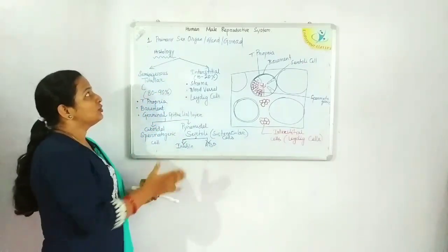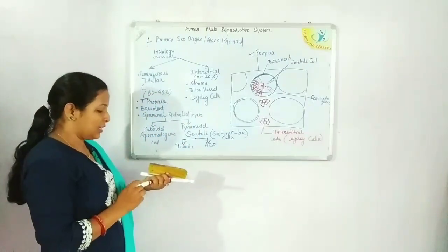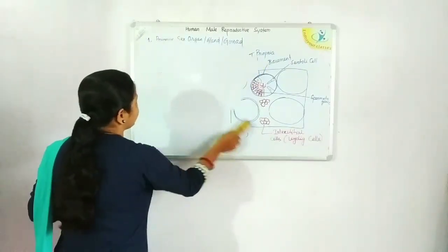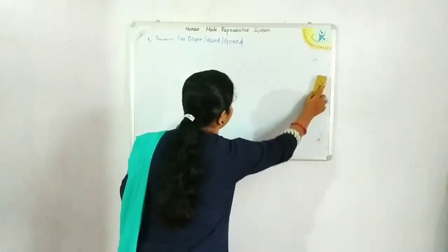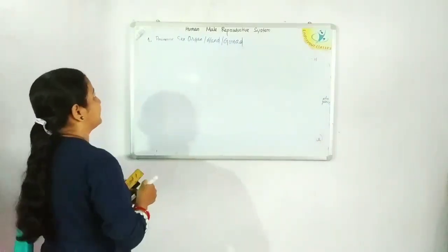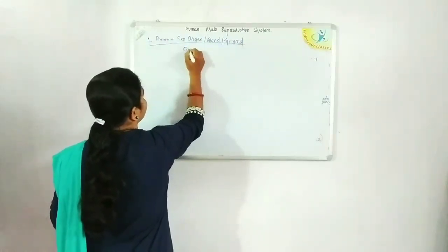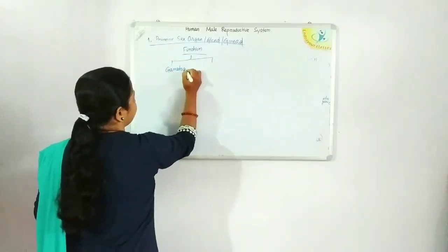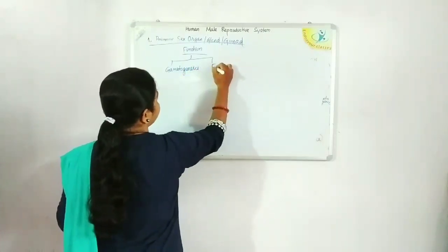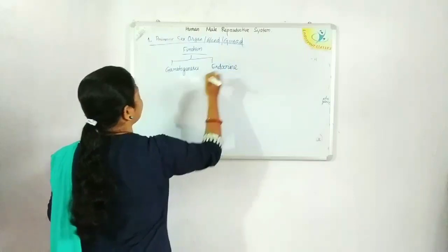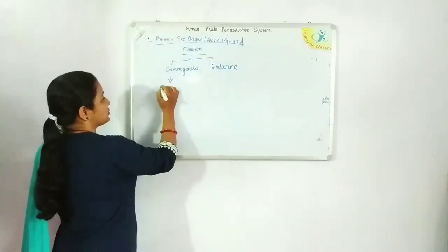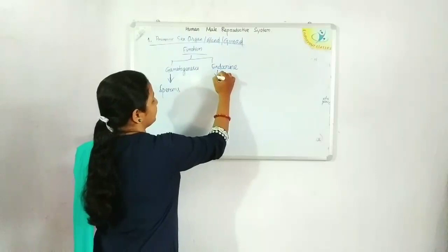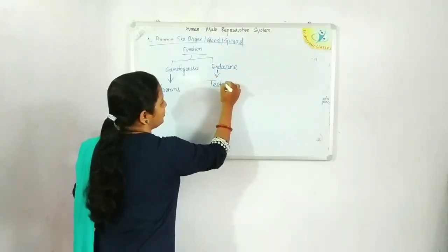This is all about the structure of the male sex gland. The testis has mainly two functions: one is the gametogenesis function, where it produces the male gamete — sperms; and the other is the endocrine function, which involves the formation of the male sex hormone testosterone.